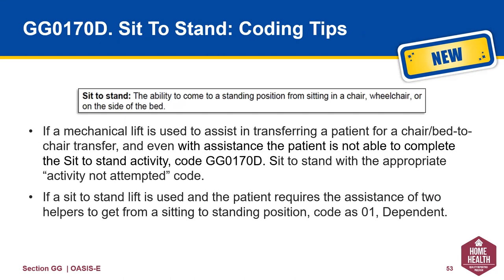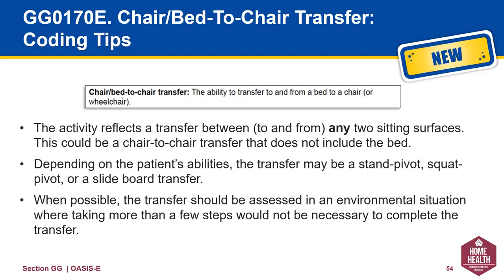Sit to stand is the ability to come to a standing position from sitting in a chair, wheelchair, or on the side of the bed. If a mechanical lift is used to assist in transferring a patient for bed to chair, and even with assistance the patient is not able to complete the sit to stand activity, code 170D with the appropriate activity not attempted code. If a sit to stand lift is used but the patient requires the assistance of two helpers, code as O1 dependent. 170E, chair-bed to chair transfer, is defined as the ability to transfer to and from a bed to a chair or wheelchair. This activity reflects the transfer to and from any two sitting surfaces. Depending on the patient's abilities, the transfer may be stand pivot, squat pivot, or sliding board transfer. When possible, the transfer should be assessed in an environmental situation where taking more than a few steps is not necessary to complete this transfer.